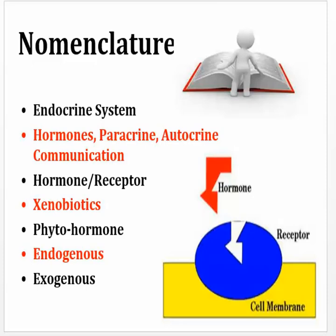Hormones refer to a chemical that is released in one part of the body and travels long distances to affect another part — this is long-distance communication. Paracrine communication — 'para' means around — is signaling where one cell affects a nearby cell. And autocrine is signaling in which a cell secretes a hormone or chemical that binds to receptors in that same cell.